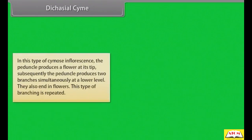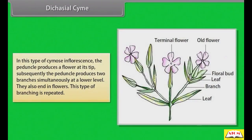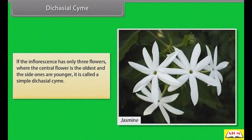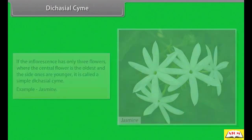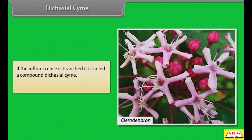In dichasial cyme, the peduncle produces a flower at its tip; subsequently the peduncle produces two branches simultaneously at a lower level, which also end in flowers, and this type of branching is repeated. If the inflorescence has only three flowers where the central flower is the oldest and the side ones are younger, it is called a simple dichasial cyme — example: Jasmine. If the inflorescence is branched, it is called a compound dichasial cyme — example: Clerodendron.